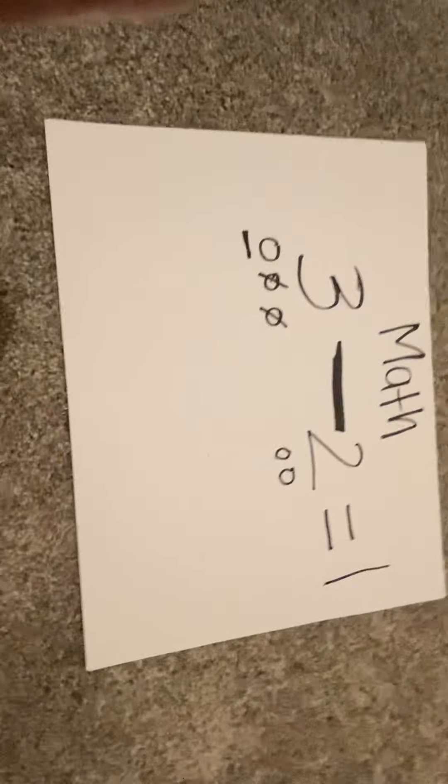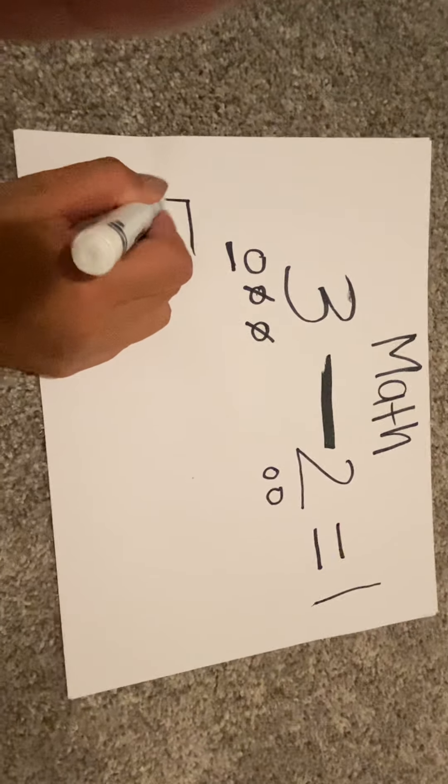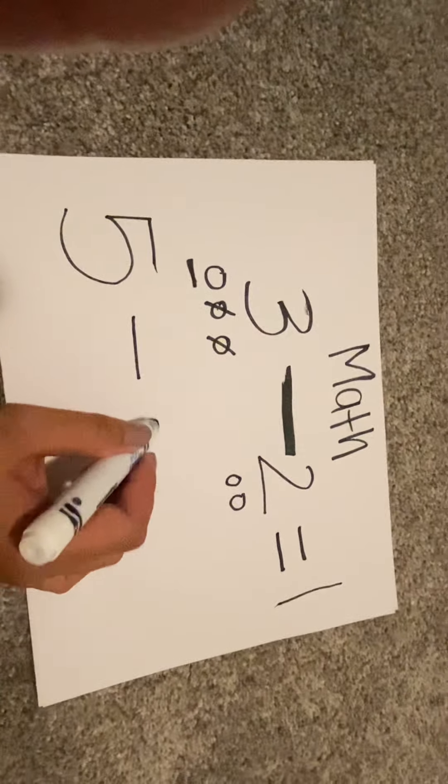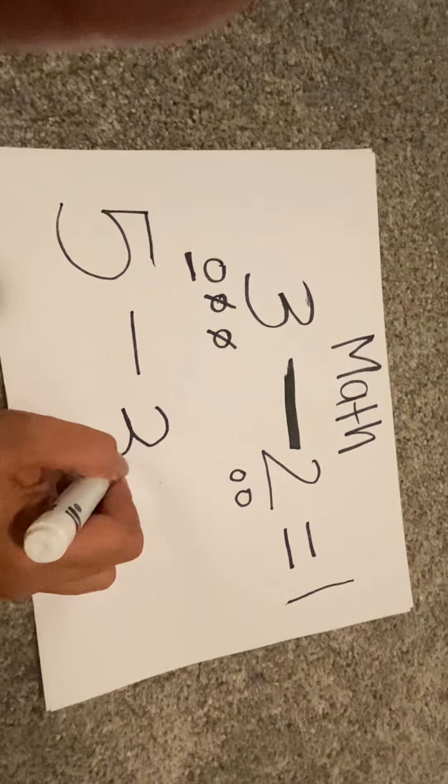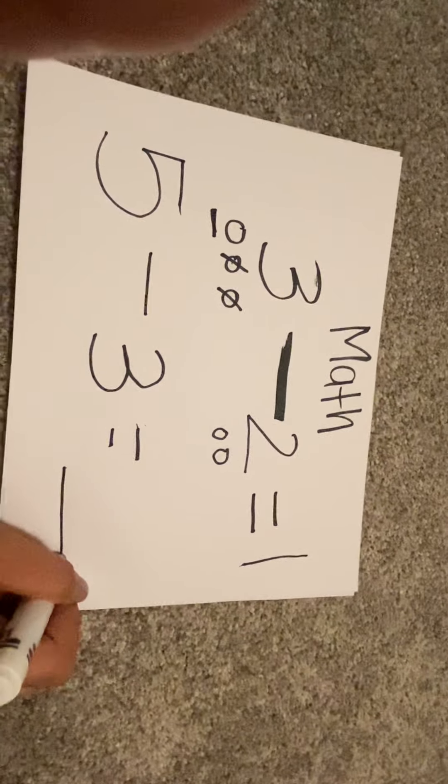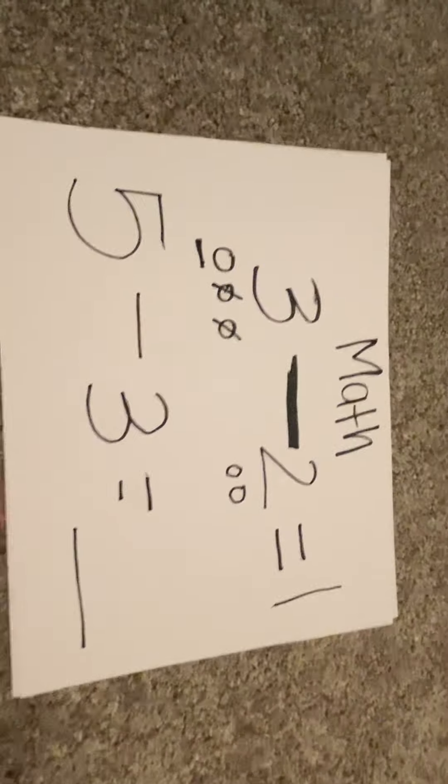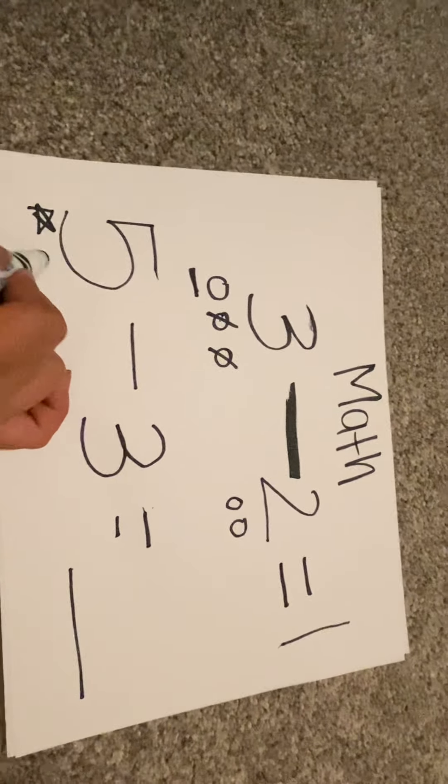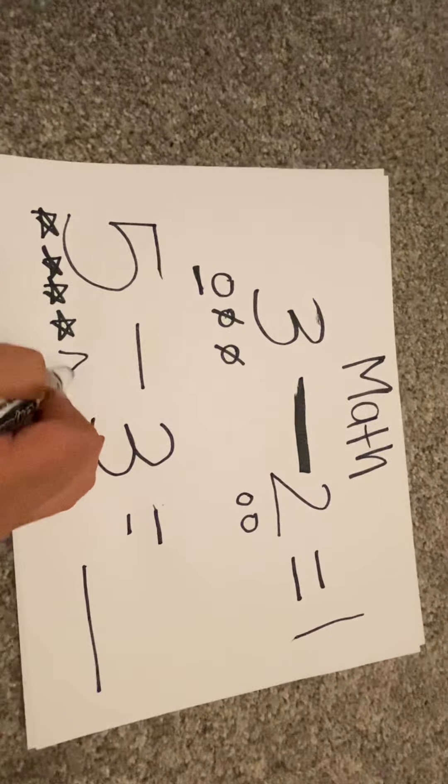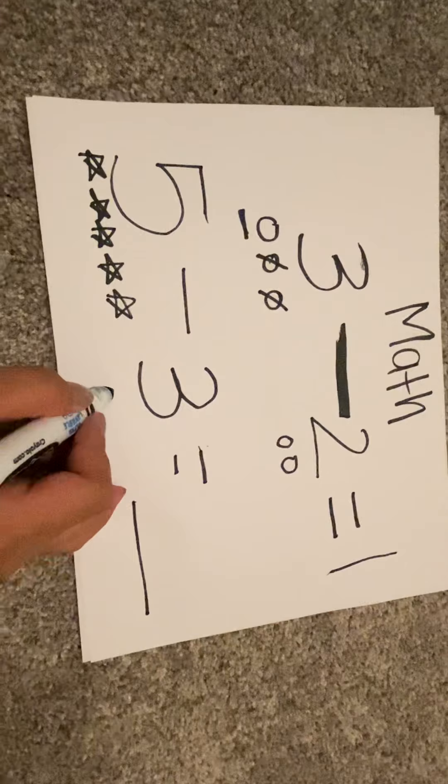Let's do one more on a piece of paper. So I'm going to do five minus three equals, and then we are going to be writing that answer right on this line. So let's say we have five stars: one, two, three, four, five.